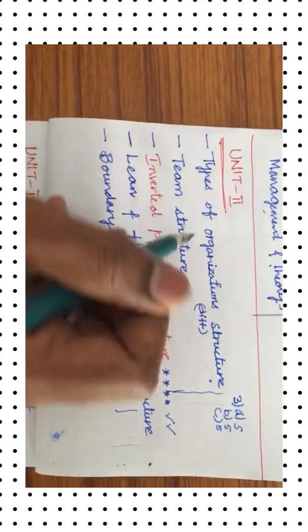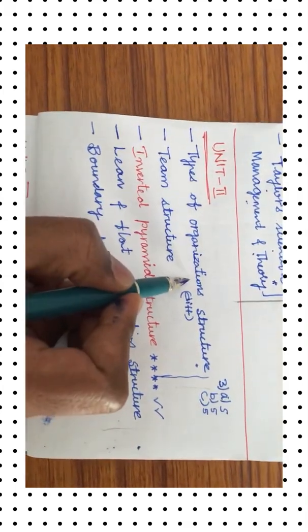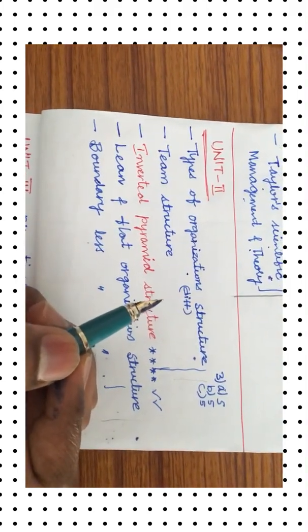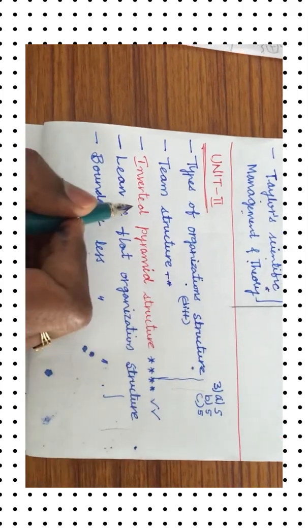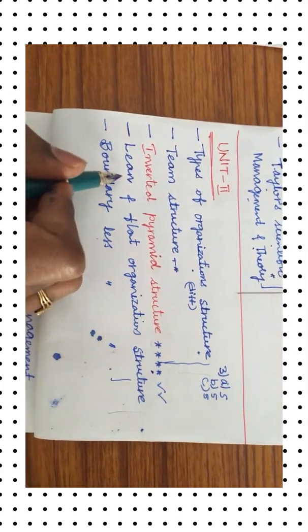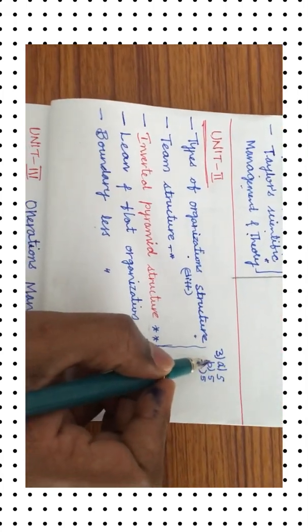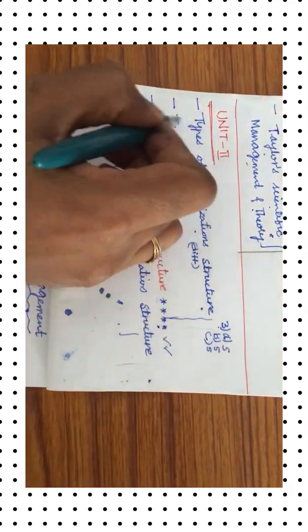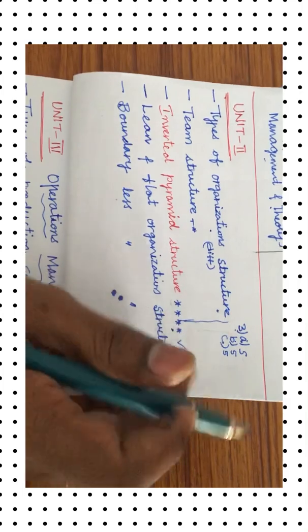Unit 2 is all about designing organizations. You are supposed to cover the types of organizations such as line, line and staff, functional, committee, virtual, and cellular, along with their differences. Team structure is also asked many times, and inverted pyramid structure is one of the important questions asked in previous years. Lean and flat organization structure and boundaryless organization are also important. Expect only one question from Unit 2, likely a 5-mark or 10-and-5 split, as there is a lot of theory.